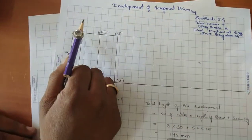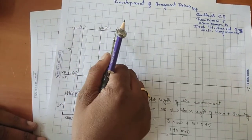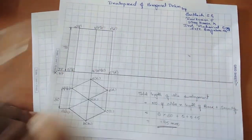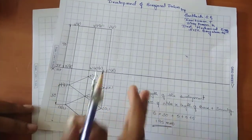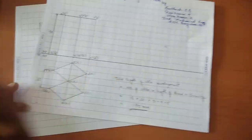Similarly for the top face: A, F, B, E, C, D. This completes the naming in both the front view and top view of the hexagonal prism.